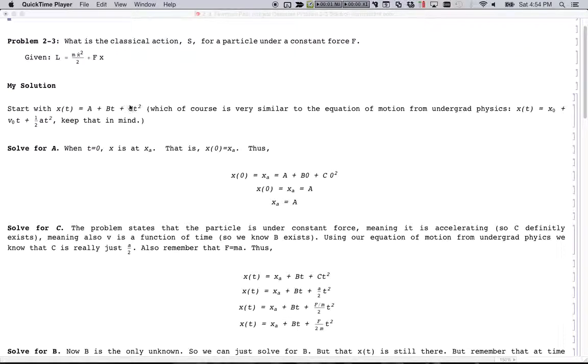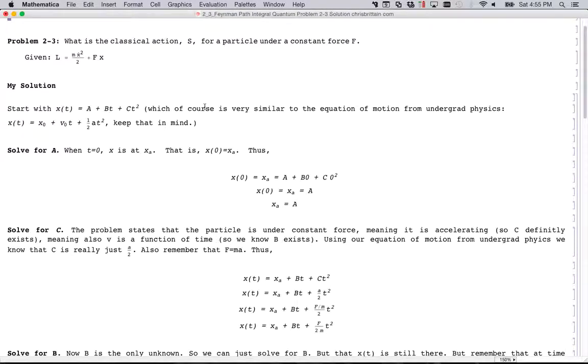So to start, we'll start with the basic equation from kinematics: x(t) equals a plus bt plus ct squared. And this is very similar to this equation from undergrad physics. x sub 0 is the initial position, that's like a. Velocity sub 0 is b, and then a half a is c.